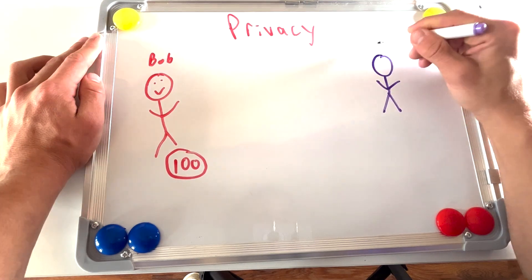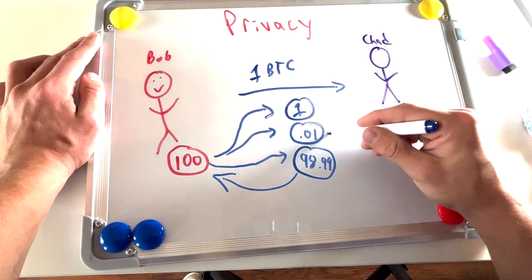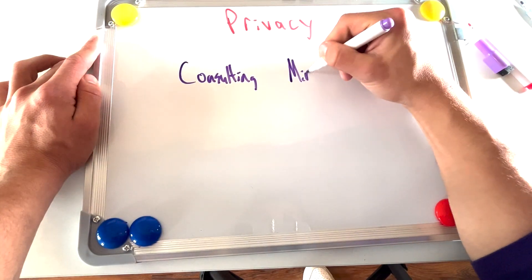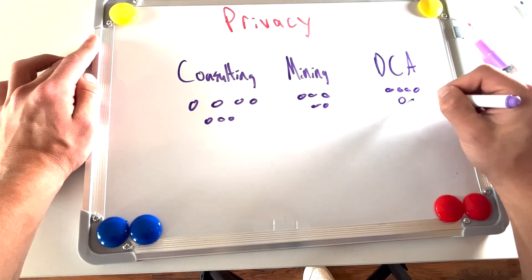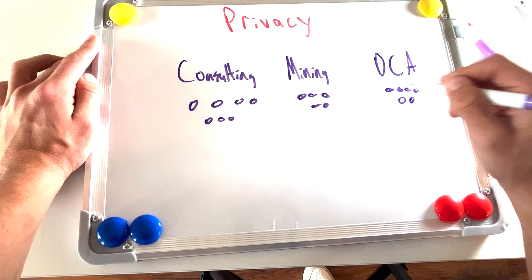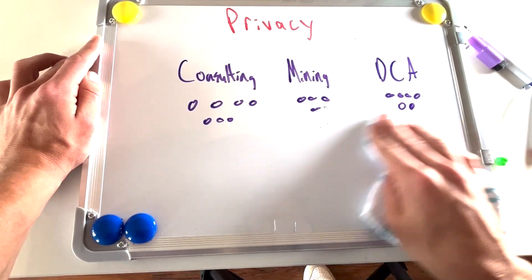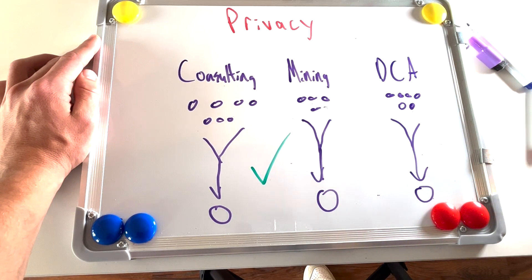When you send Bitcoin to someone else, they can look on-chain and see the inputs used in that transaction. If Bob uses a 100 Bitcoin UTXO to send one Bitcoin to Chad, then Chad will know that Bob still has 99 Bitcoin — information that Bob may not want others privy to. Something else to consider with privacy is keeping track of your UTXOs and who you received them from. Alongside his consulting business, let's imagine Bob also mines Bitcoin through Blockware's hosted mining service and dollar-cost averages through an exchange like Swan, Strike, or Cash App. When Bob is consolidating UTXOs, he should keep separate stashes for each of these three streams. If Bob combines UTXOs from Blockware with UTXOs from the exchange, then both parties will be able to see the other coins on-chain. Bob should consolidate UTXOs from his consulting business, his mining rewards, and his DCA into separate stashes.